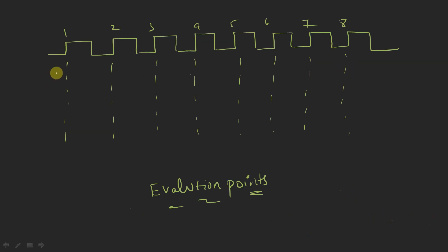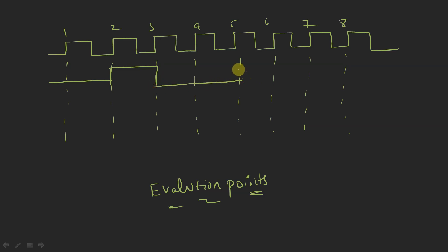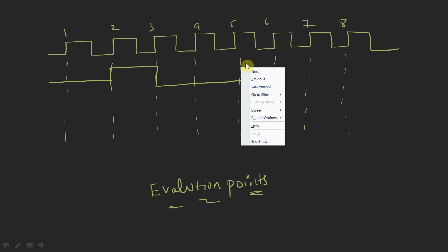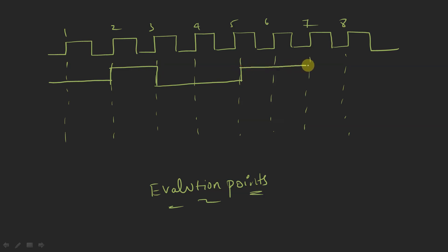Now I am going to draw my x signal. Let's say x is 0 initially, then it becomes 1 here, stays 1 for two cycles, and then goes back to 0. That is some random signal I have taken.